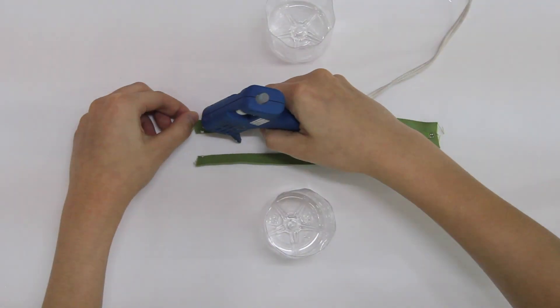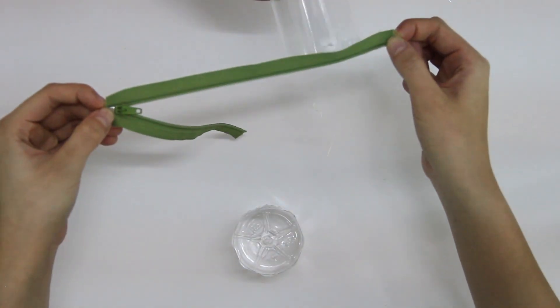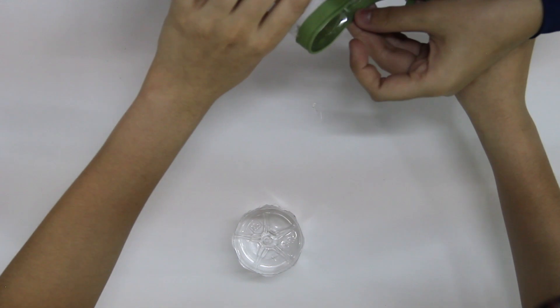Using a glue gun, slowly stick the zipper on the first bottle. When you are done with the first bottle, do the same again for the other bottle.